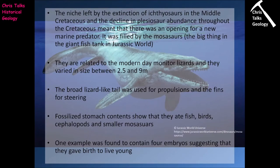There's a niche left by the extinction of the ichthyosaurs in the middle Cretaceous and the decline of the plesiosaurs throughout the Cretaceous. As we move into the Cretaceous, the ichthyosaurs and plesiosaurs are on the way out, meaning there is now an opening for a new apex marine predator. This opening in the marine environment is filled by the mosasaurs.